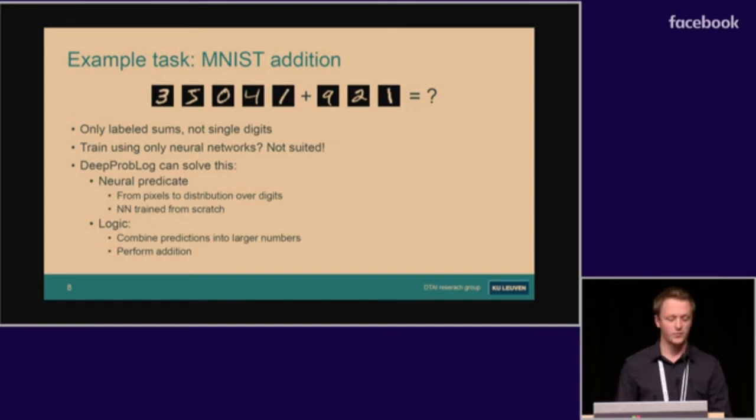Let me demonstrate this on an example task. We change the MNIST task to grouping multiple digits together into multi-digit numbers, and we label pairs of these with their sum, so there are no singly labeled digits. Can we solve this using a neural network? Well, they're not extremely suited to do this because it would be quite a hard task.